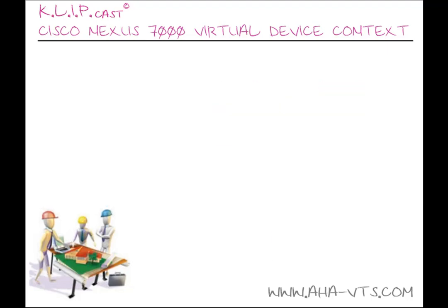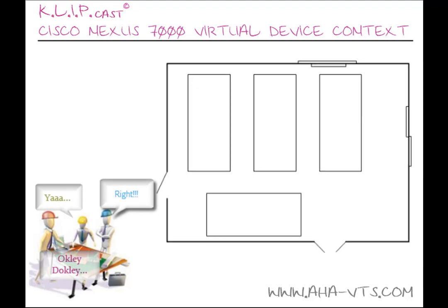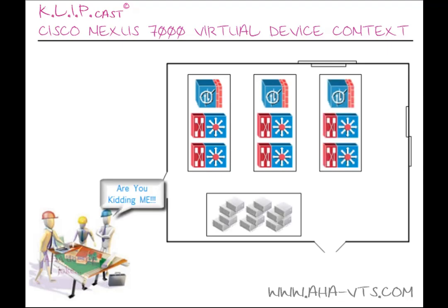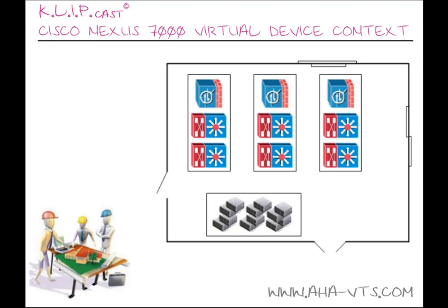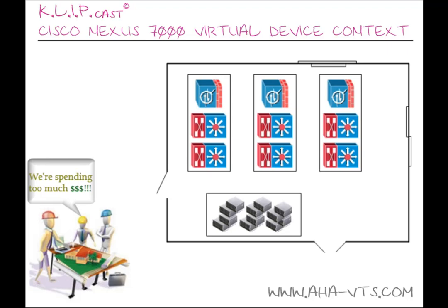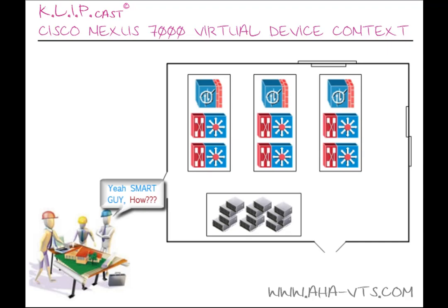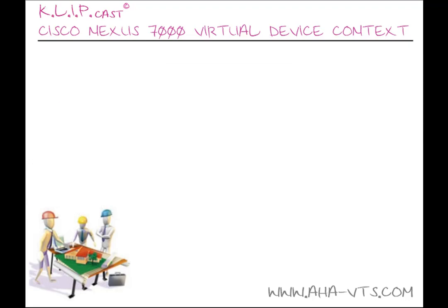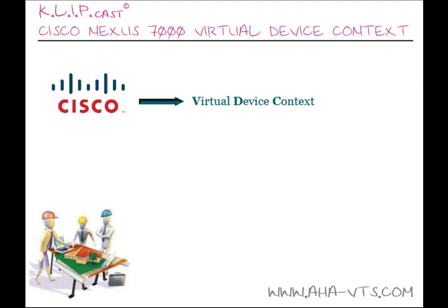All of this sounds pretty cool, but you're going to need this at the enterprise core, distribution, and access layer too. And let's not even talk about the server farm environment. As you can see, the footprint of the data center environment can get quite large if you've scaled incorrectly. In this day and age where costs are scrutinized drastically, data centers are no exception. So how are we going to decrease costs such as HVAC, power consumption, spacing, hardware purchase, and so on? Well, to alleviate some of those concerns, Cisco came up with the concept of Virtual Device Context.